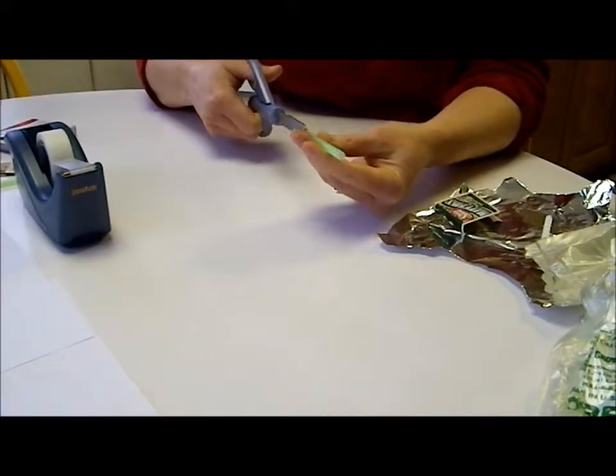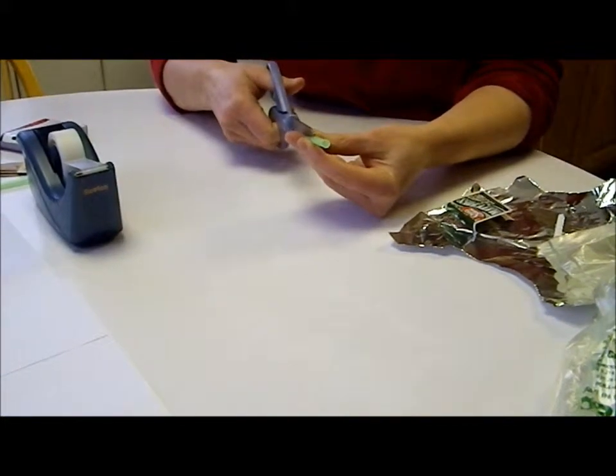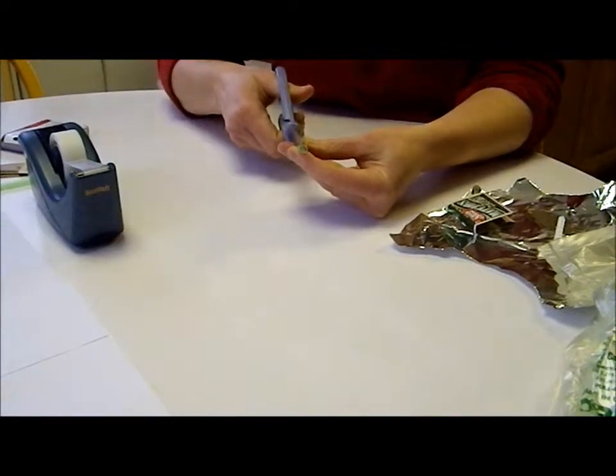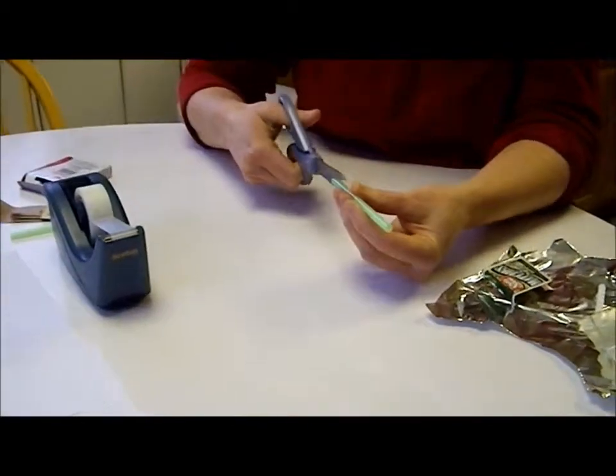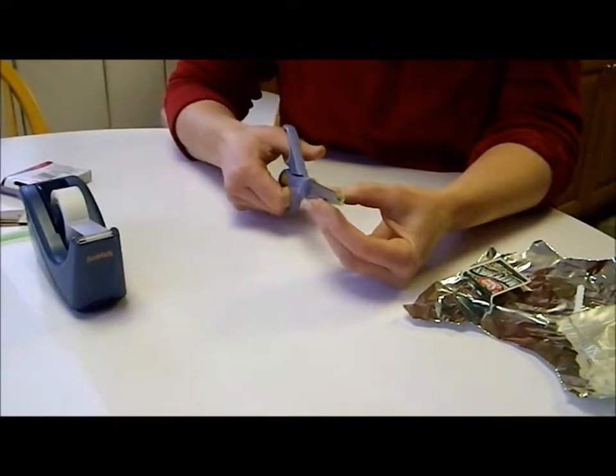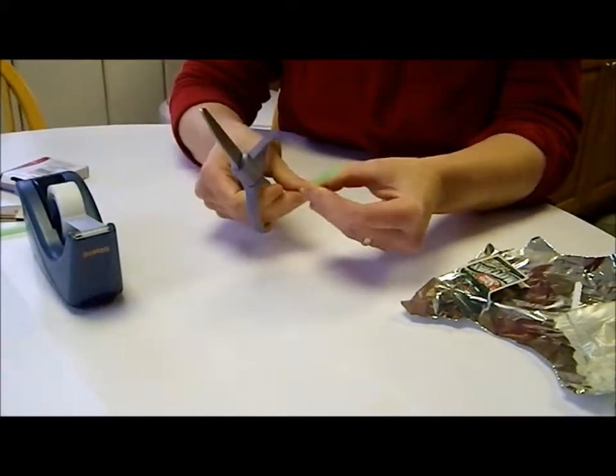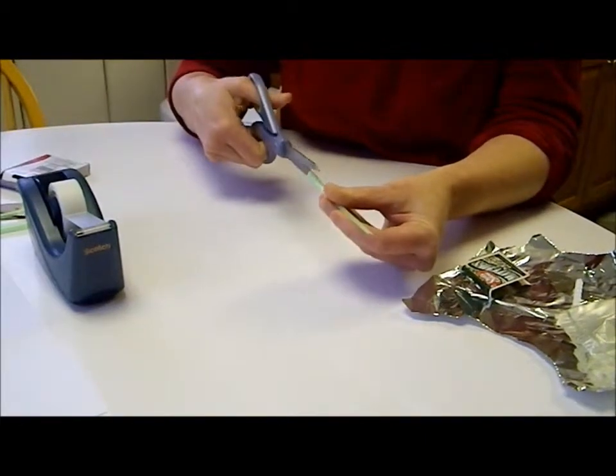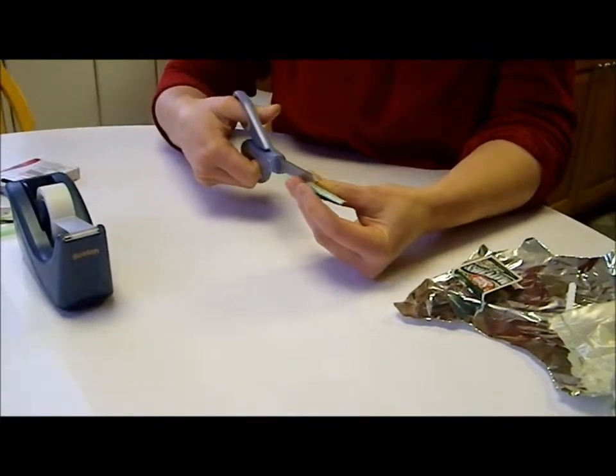And then you're going to take the straw and we need it to be as light as possible. So we're going to cut the straw in half, like so, and cut the straw in half again. So that's the first half. And then this is the second.